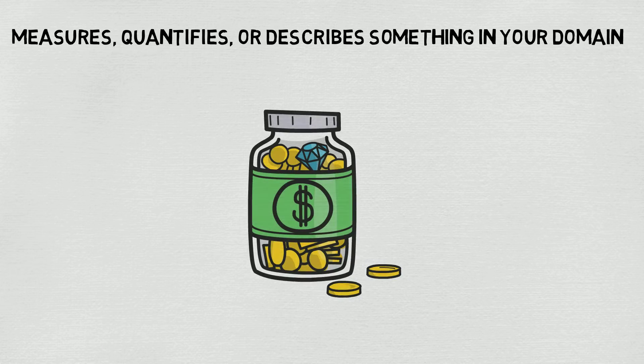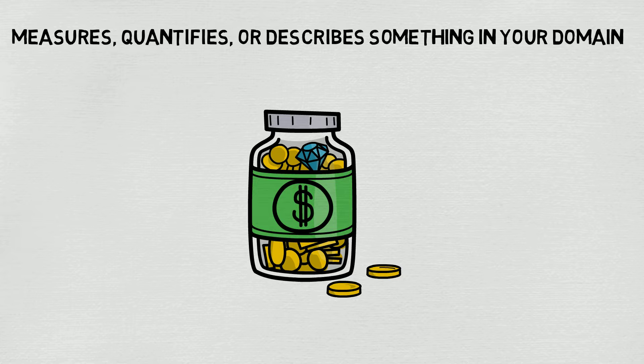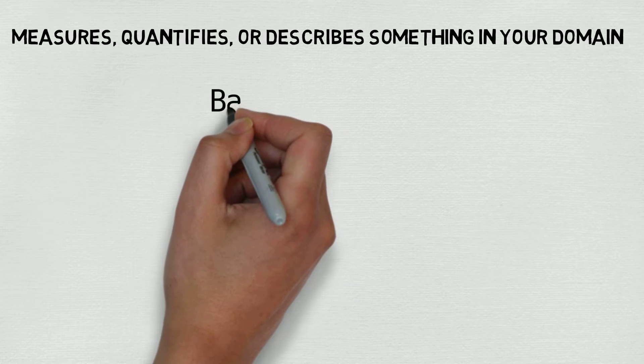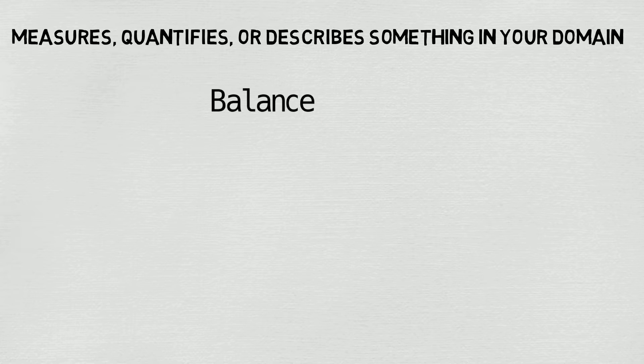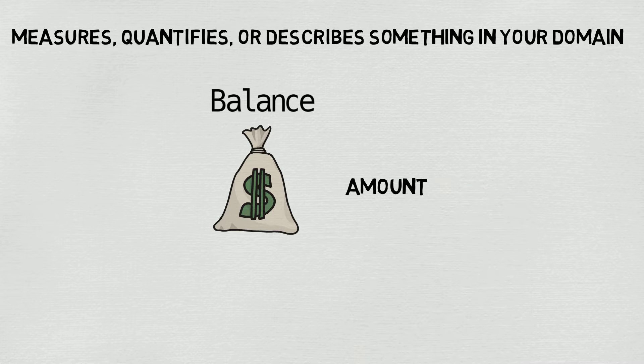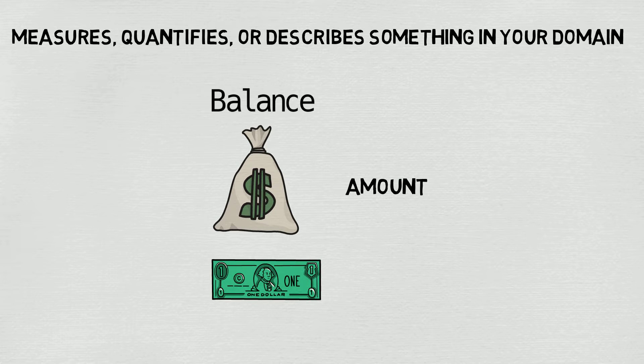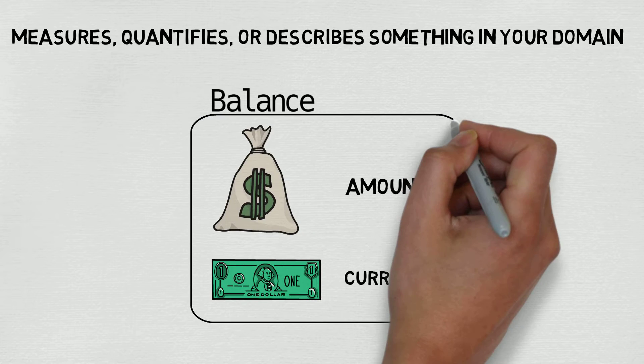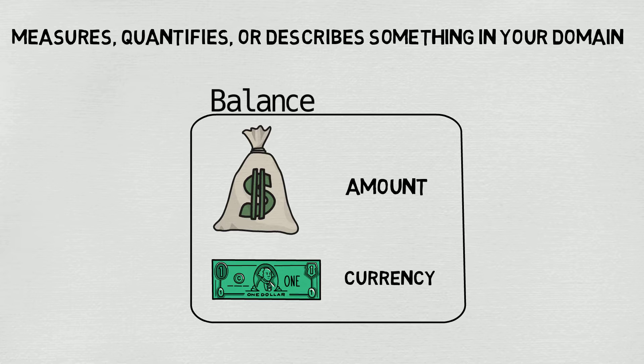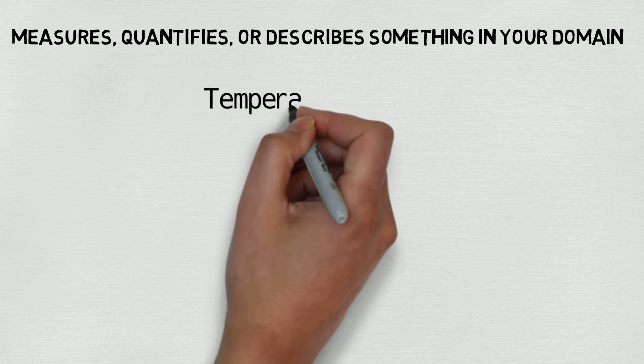Probably the best real-world example of value objects is money. The simplest scenario to think about is your own personal bank account balance, which tracks two important things. The first, and most obvious, is the amount of money you have. But the second, and perhaps less obvious, is the currency that money is stored in. As we all know, not all currencies have the same value, so it's important to establish that relationship to correctly represent a bank account balance.